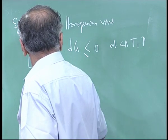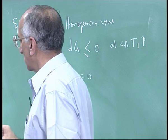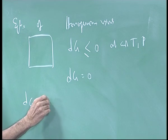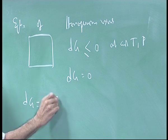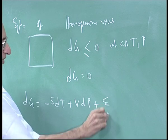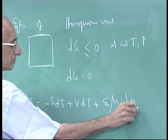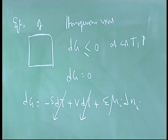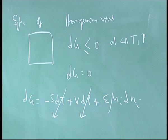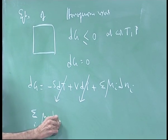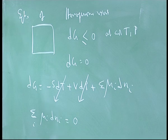At equilibrium, dG equals 0 as the criterion of equilibrium. dG equals minus SdT plus VdP plus sum over mu_i dN_i. At constant T and P, the first two terms are zero, so you get sum over i of mu_i dN_i equals 0.